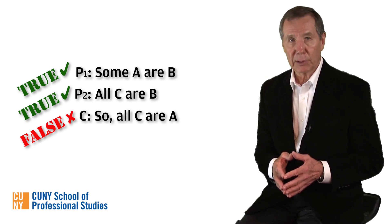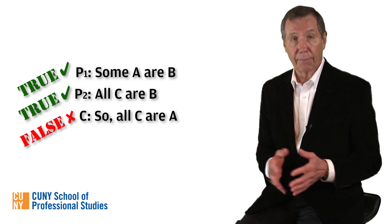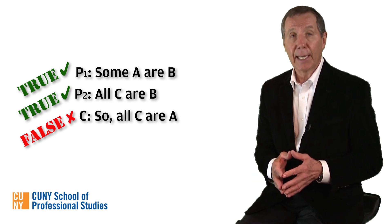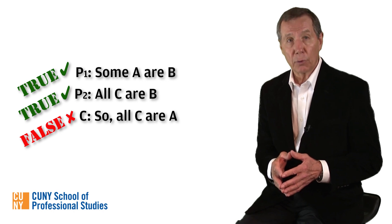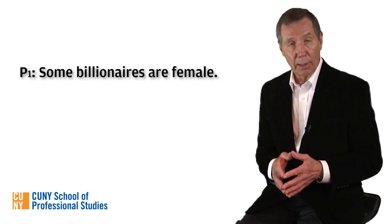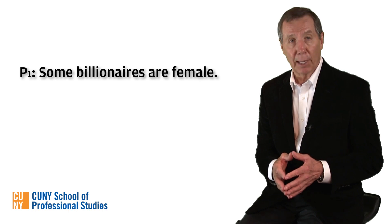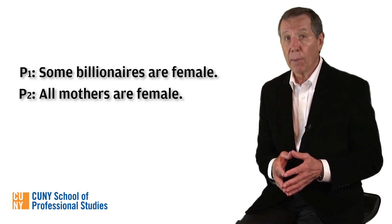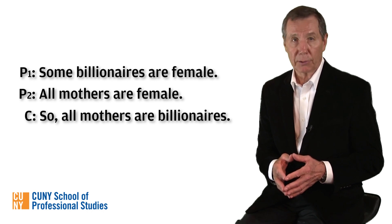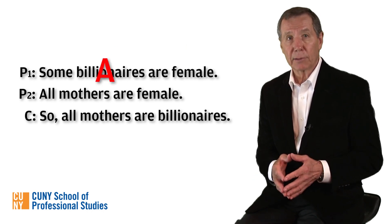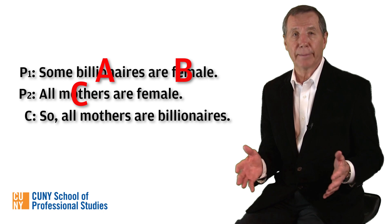That's how we create our counter example. We plug things in for A, B, and C in an attempt to find a case where the premises turn out true and the conclusion turns out false. Here's our counter example that shows the argument is invalid. Premise one: some billionaires are female. Premise two: all mothers are female. Conclusion: all mothers are billionaires. For A, we inserted billionaires; for B, we chose females; and for C, mothers.